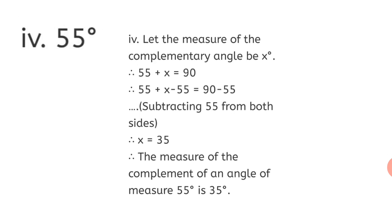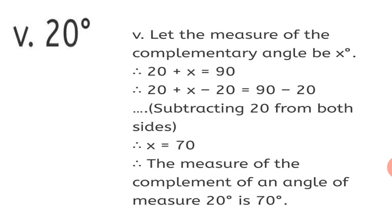Fourth: 55 degrees. Let the measure of the complementary angle be x degrees. Therefore, 55 plus x equals 90. Subtracting 55 from both sides gives x equals 35. The complement of 55 degrees is 35 degrees. Fifth: 20 degrees. Let x be the complementary angle. 20 plus x equals 90. Subtracting 20 from both sides gives x equals 70. The complement of 20 degrees is 70 degrees.